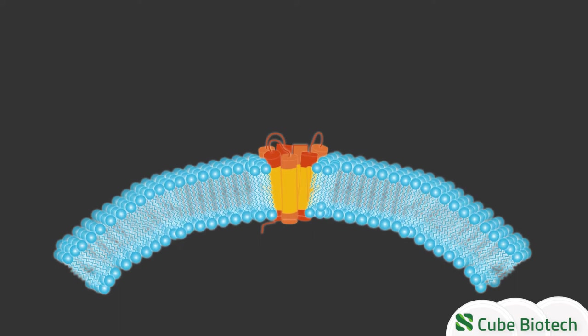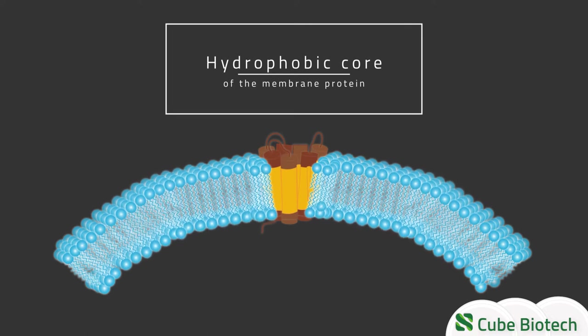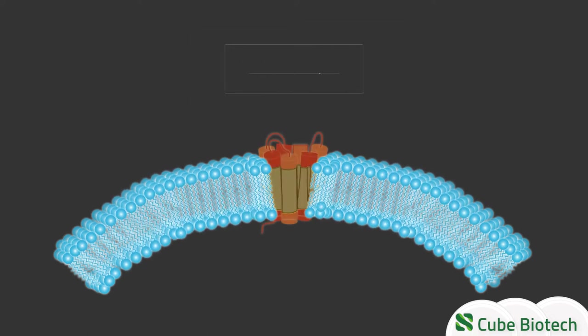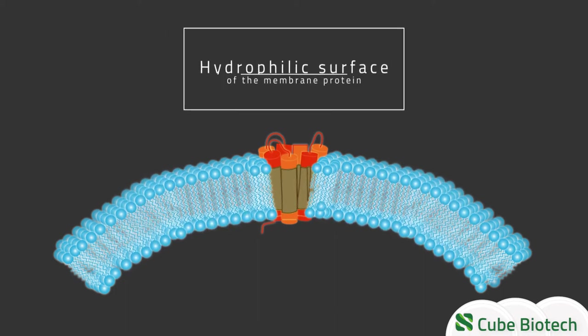Membrane proteins mimic these properties. Therefore, the surfaces of membrane proteins inside the hydrophobic core of the lipid bilayer are also hydrophobic, whereas those parts of the protein in contact with the aqueous membrane environment are hydrophilic.